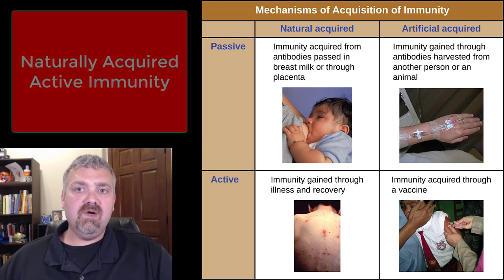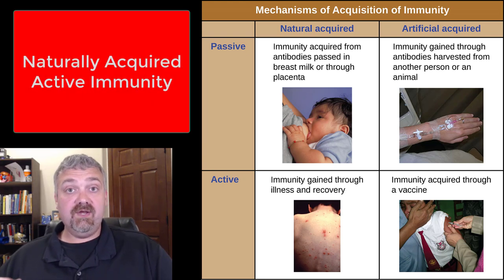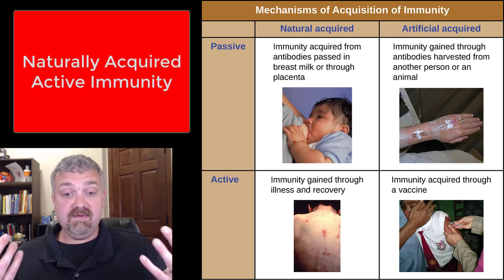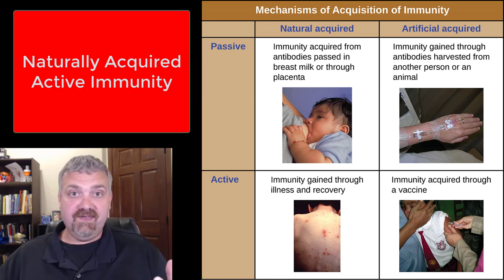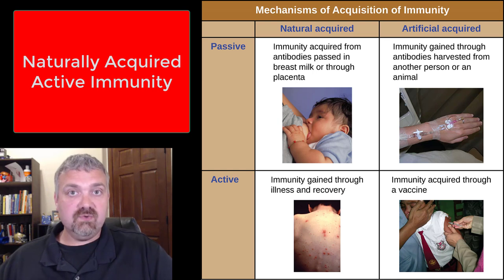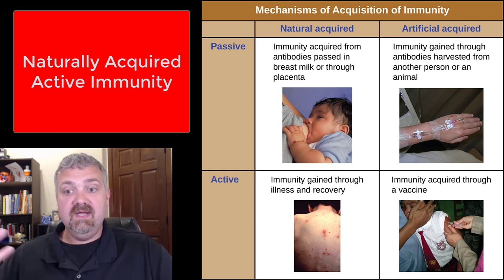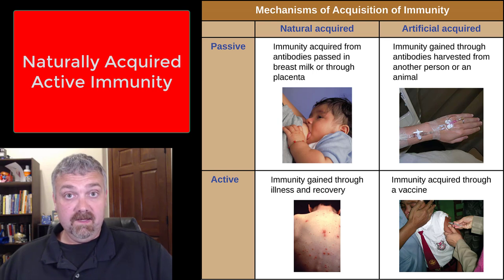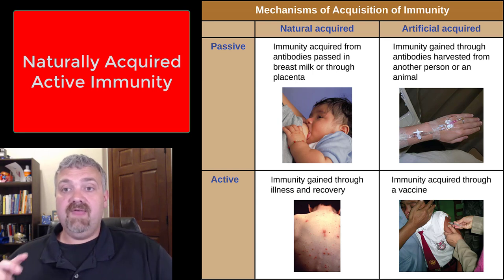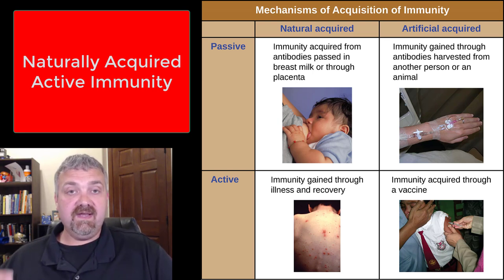Next we have naturally acquired active immunity. This is where you're exposed to an antigen — you either got sick or you didn't. If you got sick and you didn't die, you would now have naturally acquired active immunity. You don't even have to get sick: we can be exposed to antigens, not get sick, but still recognize them and develop immunity against them. That would be naturally acquired active immunity.